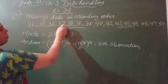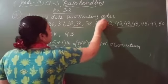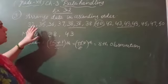So the 8th observation becomes our median. Now check in the data what is the 8th observation: 1, 2, 3, 4, 5, 6, 7, 8. So our 8th observation is 40.